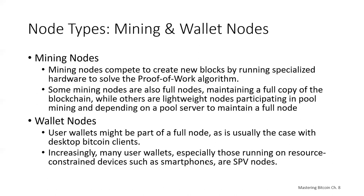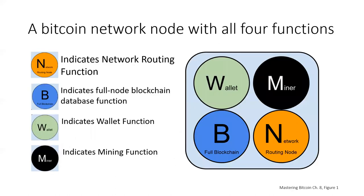Wallets can be part of a full node, for example with a desktop Bitcoin client. However, increasingly many wallets, especially those running on resource-constrained devices such as smartphones, are SPV nodes. The wallet function is shown as a circle with the letter W, a green little circle for wallet.